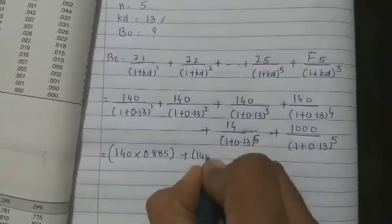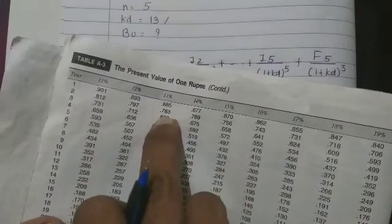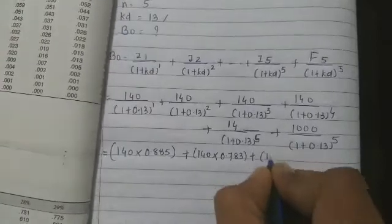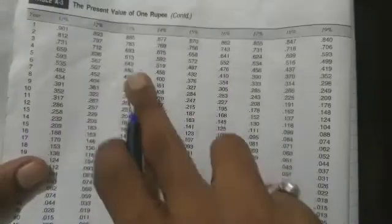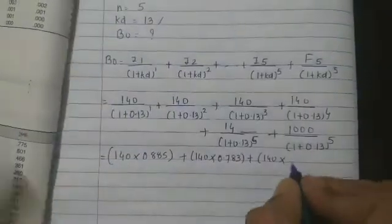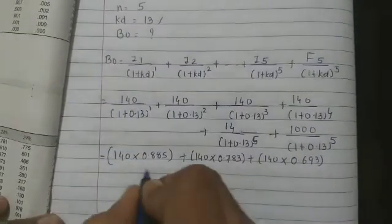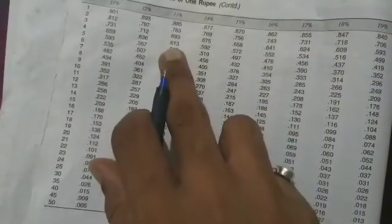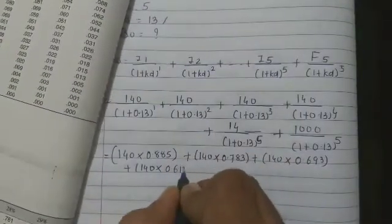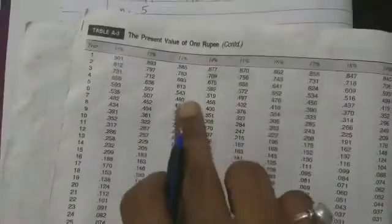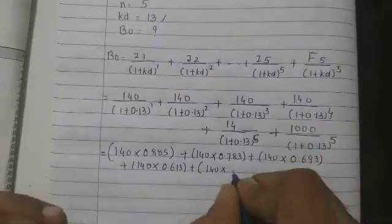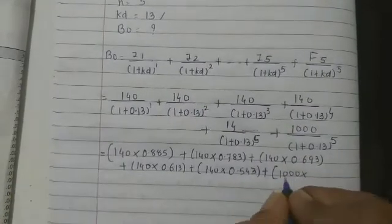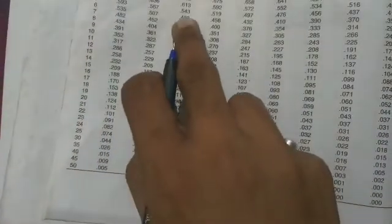Plus 140 for the 2nd year, 0.783. Plus 140 for the 3rd year, 0.693. Plus 140 for the 4th year, 0.613. Plus 140 for the 5th year, 0.543. Plus 1000, that is 0.543.